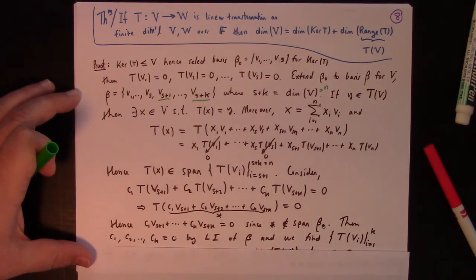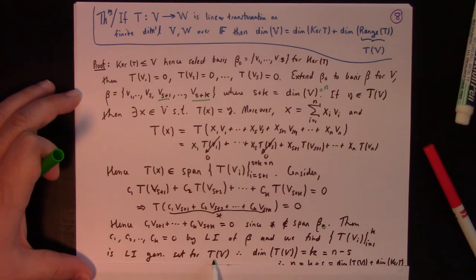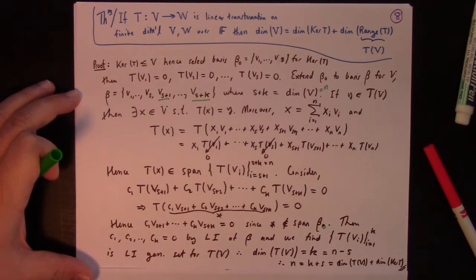Then it follows that these constants must all be zero by the linear independence of beta. And so we find that this is a linearly independent set. And that means it's a basis for the image. And the number of things in that set is k. That's equal to n minus s by construction. And there you have it.